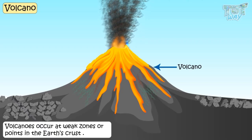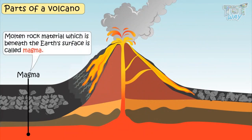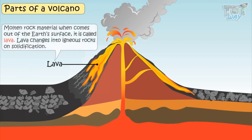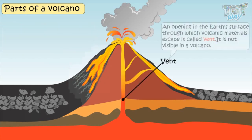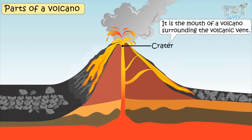Now let's learn about the various parts of a volcano. Magma is the molten rock material beneath the earth's surface. When molten rock material comes out of the earth's surface, it is called lava. On solidification, this lava turns into igneous rocks. A vent is an opening in the earth's surface through which volcanic materials escape. The vent is not visible; the visible opening is called the crater, which is the mouth of the volcano and surrounds the volcanic vent.